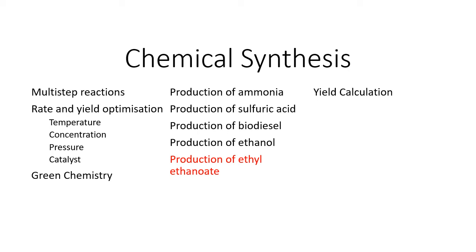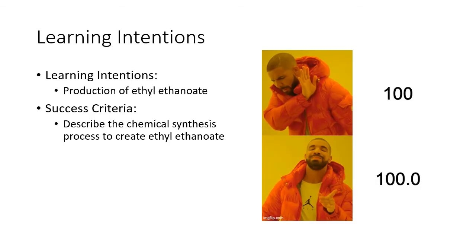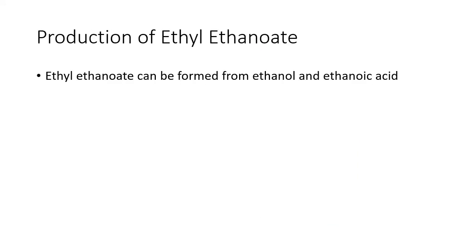Alright, hi Year 12, this is Mr. Lim here again. This is going to be our last industrial process: production of ethyl ethanoate. We're going to keep it less than two minutes. We're going to learn about ethyl ethanoate and about chemical synthesis.